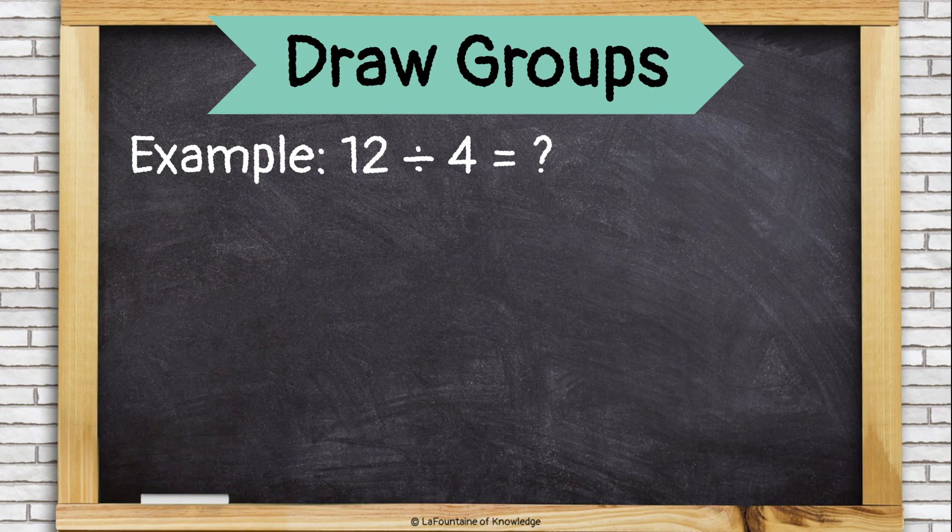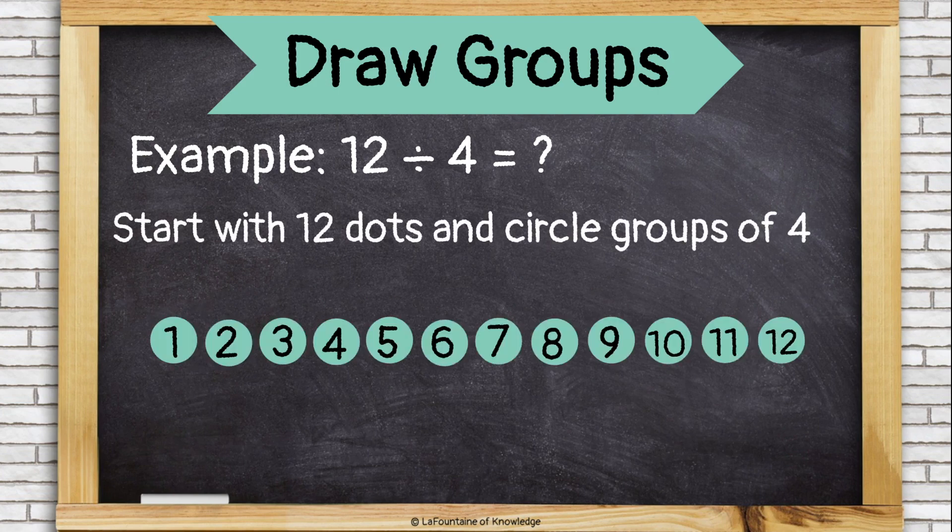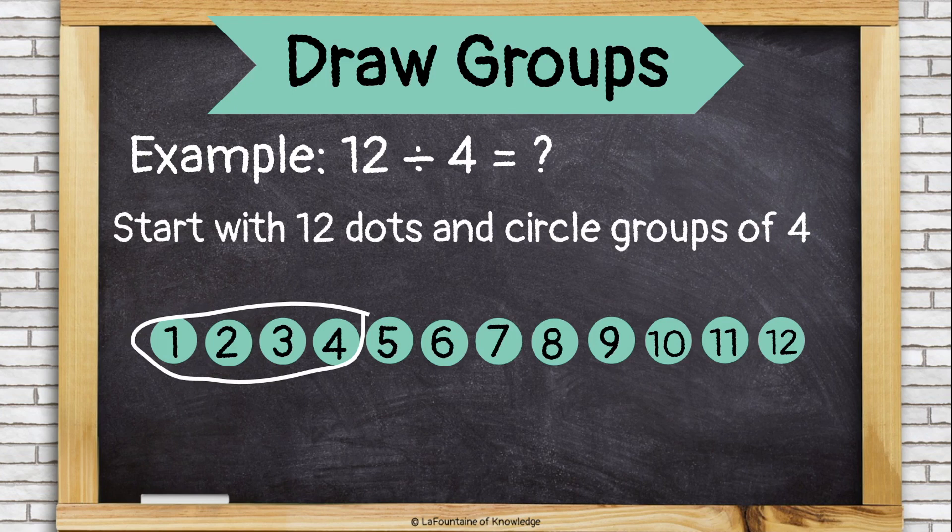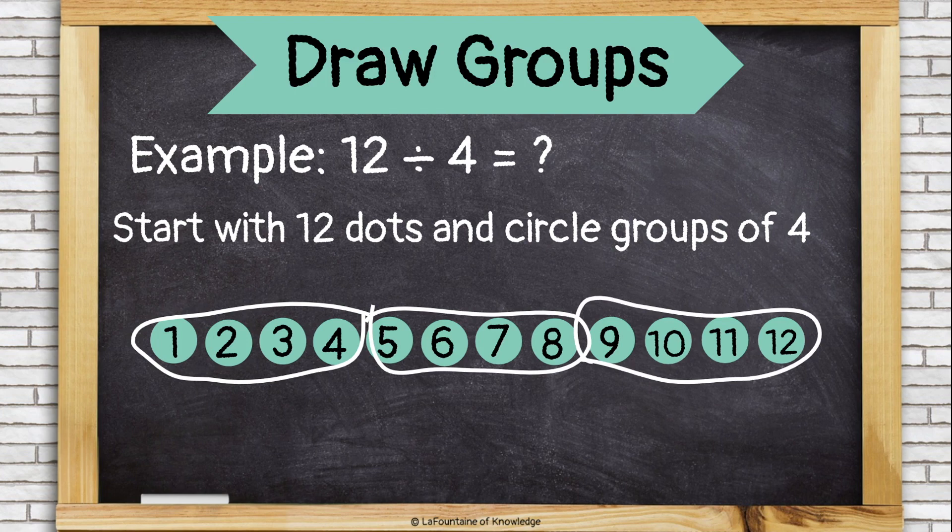Another way to use the drawing group strategy is to start with twelve dots and then circle groups of four like this. Here's four dots. Here's another group of four dots and here's another group of four dots.